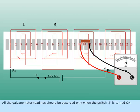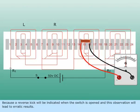All the galvanometer readings should be observed only when the switch S is turned on. Because a reverse kick will be indicated when the switch is opened and this observation will lead to erratic results.